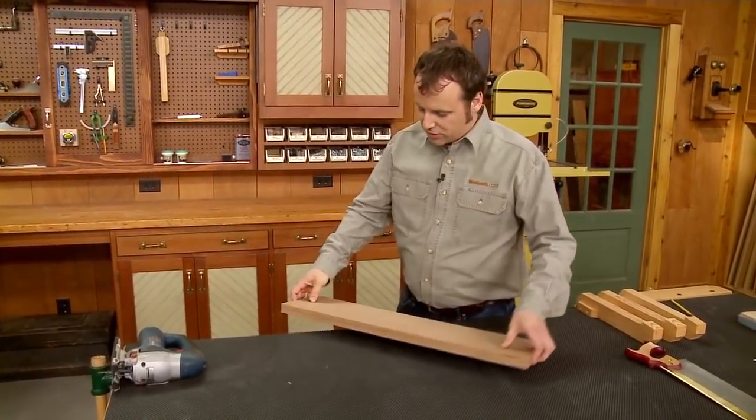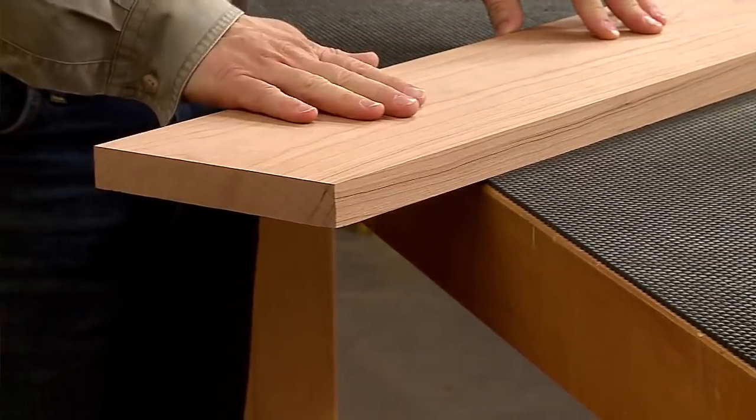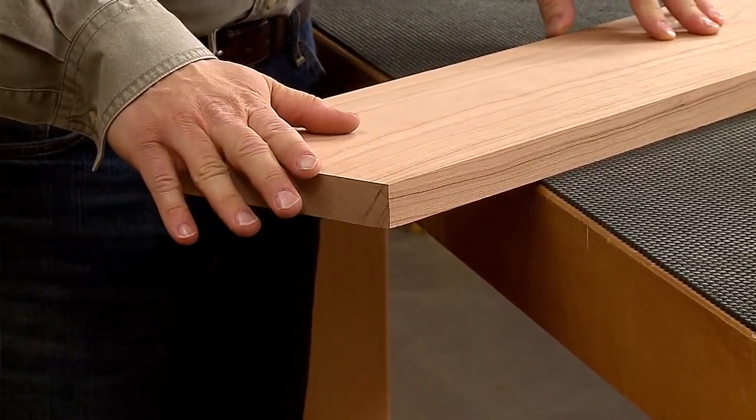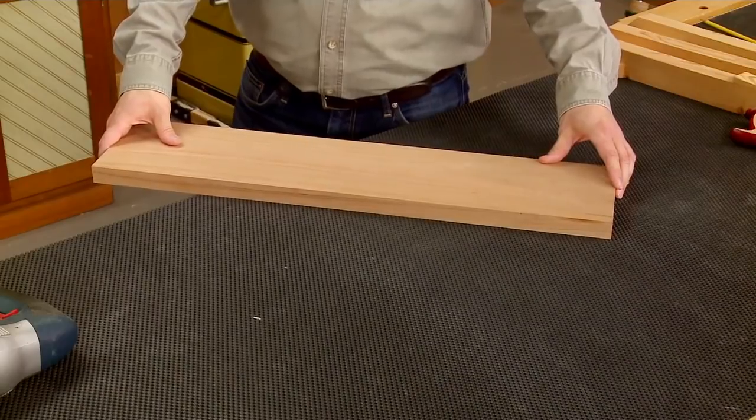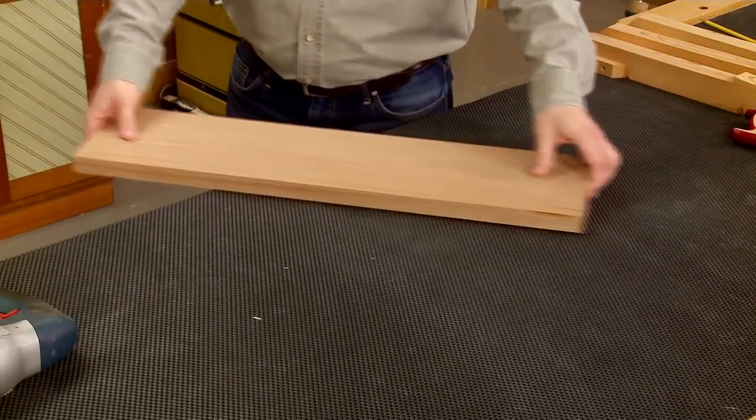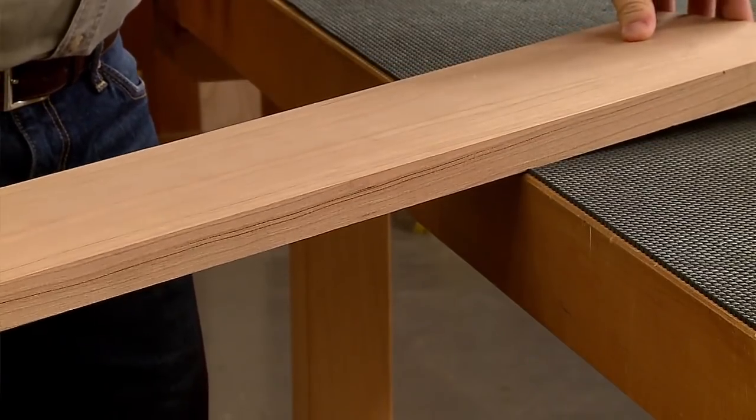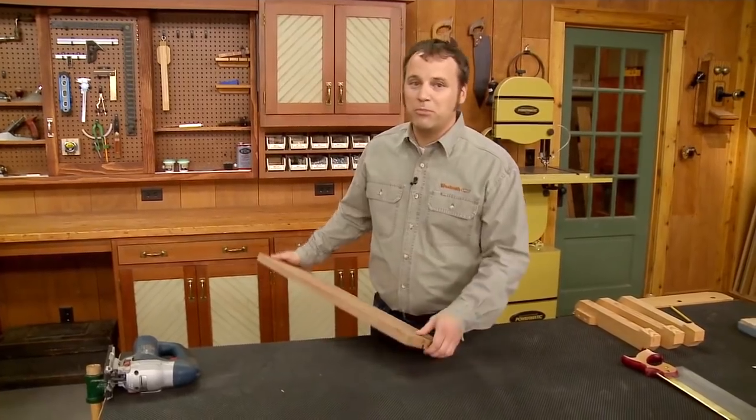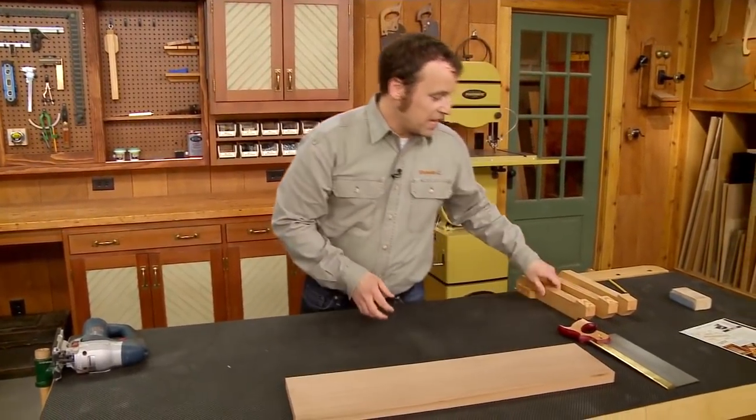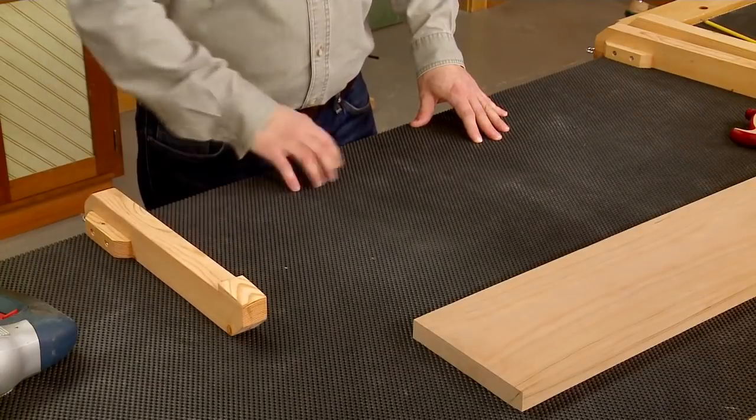Now what I could do is just rotate the piece and have the piece that I'm going to cut hanging off the end of the bench, but it could still slide around and depending on where I need to make the cut might not offer enough support. So I came up with a different solution and that's to make a set of bench hooks like this.